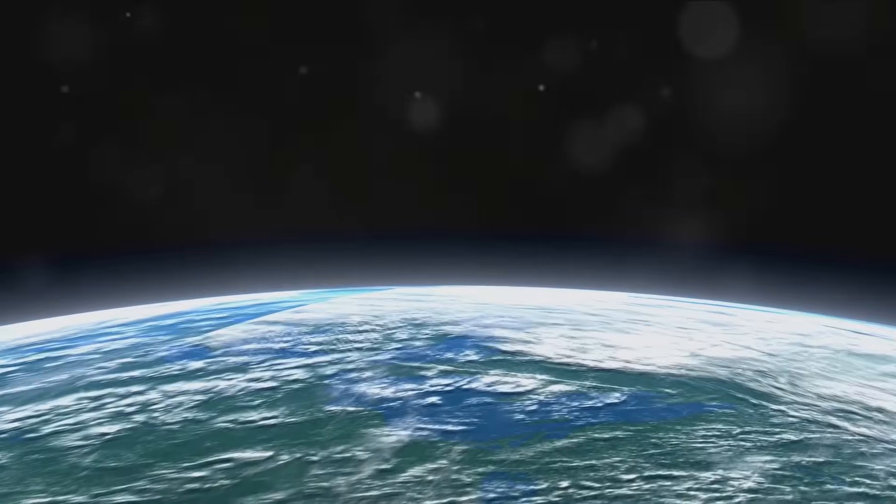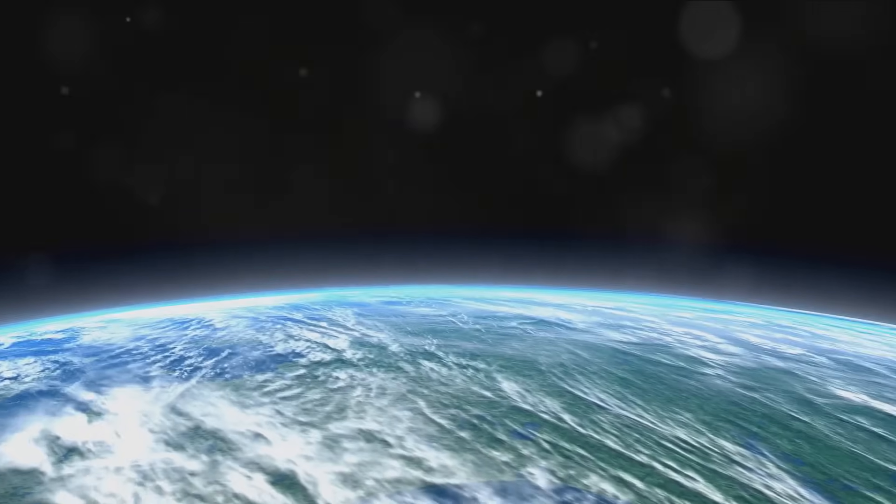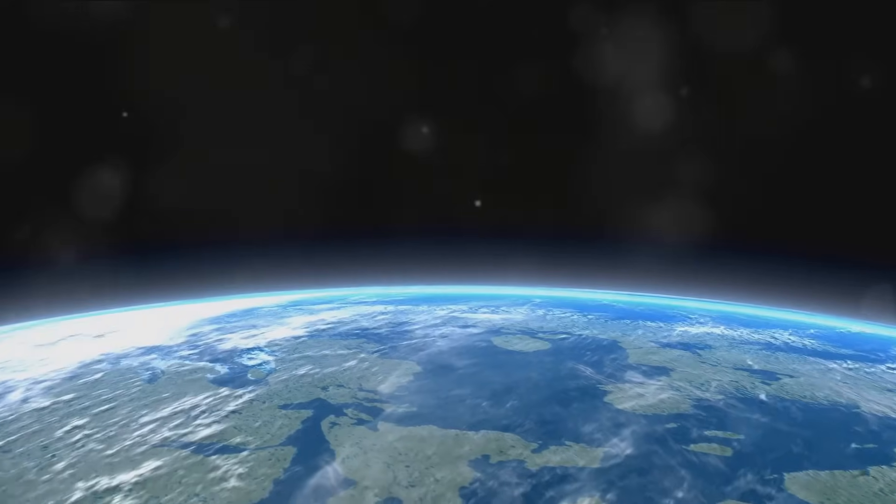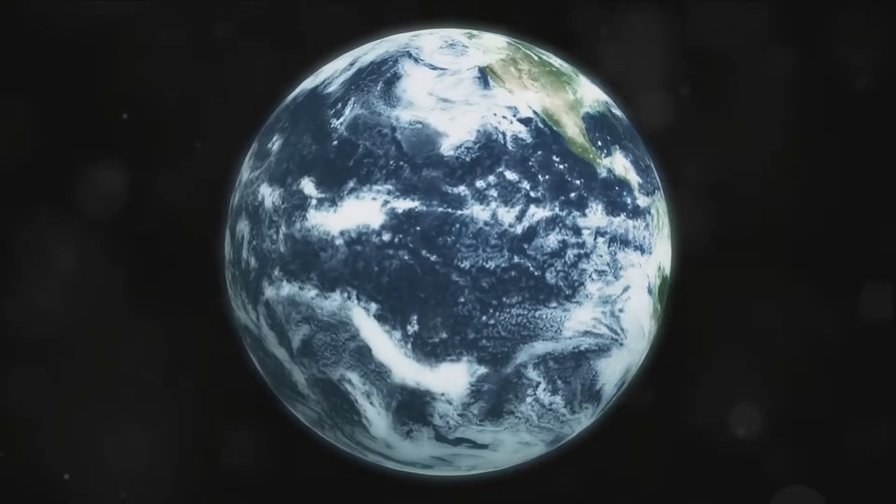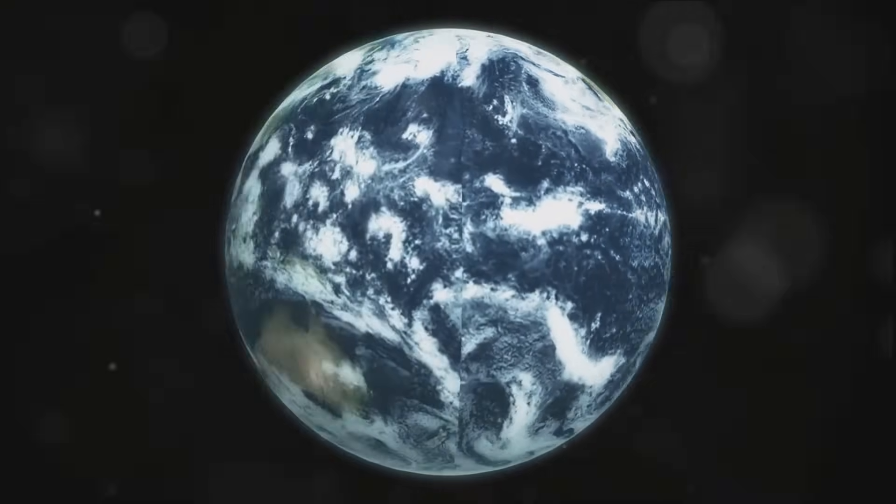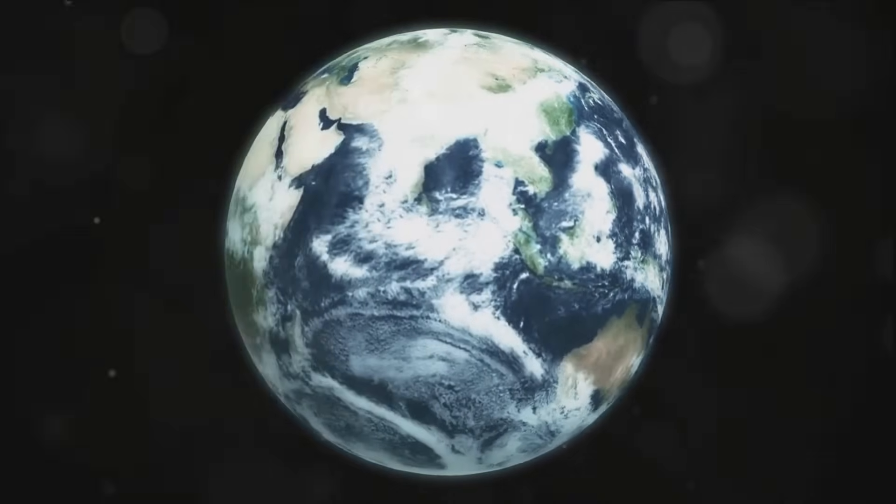Firstly, our atmosphere is a life-supporting cocktail of gases, predominantly nitrogen and oxygen, with traces of argon, carbon dioxide, and others. It acts as a protective blanket, shielding us from harmful solar radiation, maintaining temperature balance, and providing the air we breathe. Quite literally, it's our lifeline.